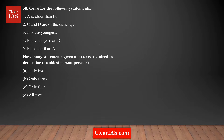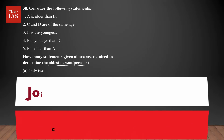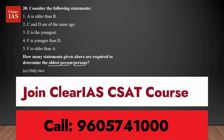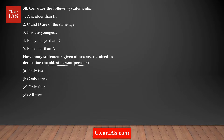In this question you have five statements and we need to find out how many of them are required to determine the oldest person or persons. We need to find out how many of these five are required to find the oldest among them. The first thing you need to identify is how many people are there — that's very important.